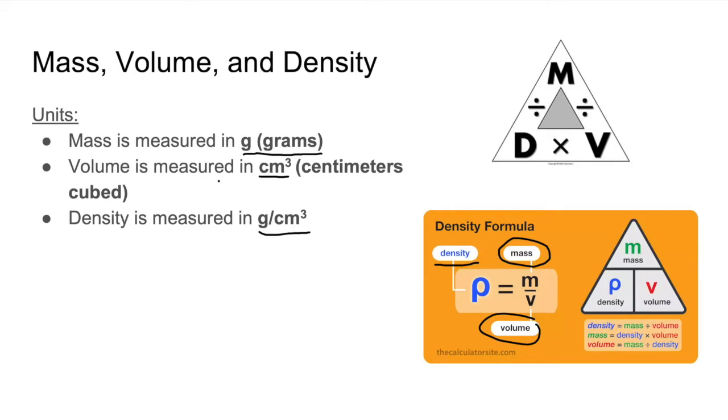So look at the units for mass, that is grams, and then units for volume is centimeters cubed. So that is why the unit of measurement for density is grams over centimeters cubed. Because in order to find density, you have to do mass divided by volume.